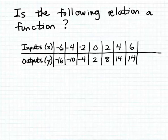Minus 6 is used as an input — it's in the domain of the relation — and it's only matched with the output minus 16, so that's fine. Minus 4 is only matched with minus 10, minus 2 is only matched with minus 4, 0 is only matched with 2, 2 is only matched with 8, 4 is only matched with 14, and 6 is only matched with 14 as well.